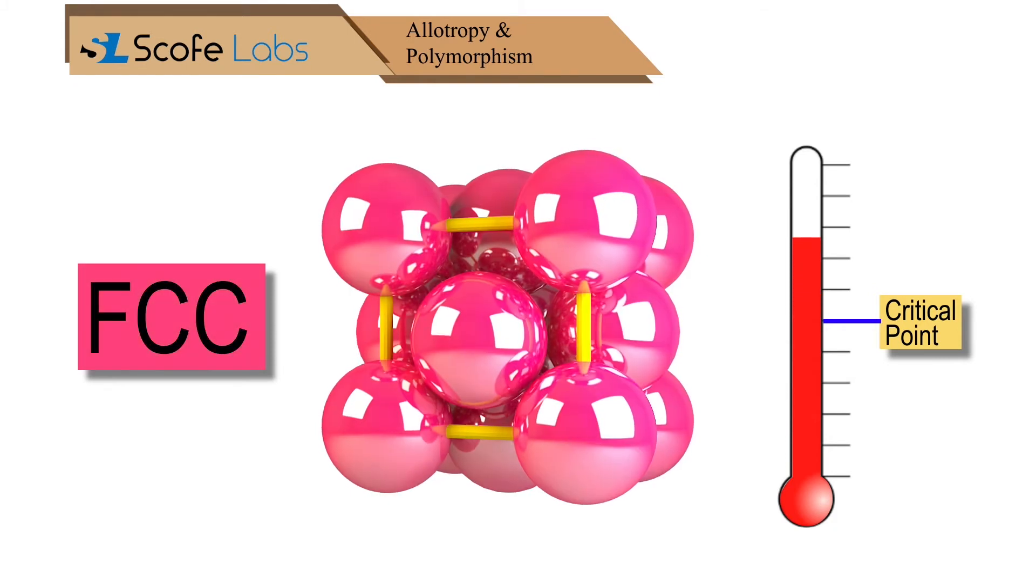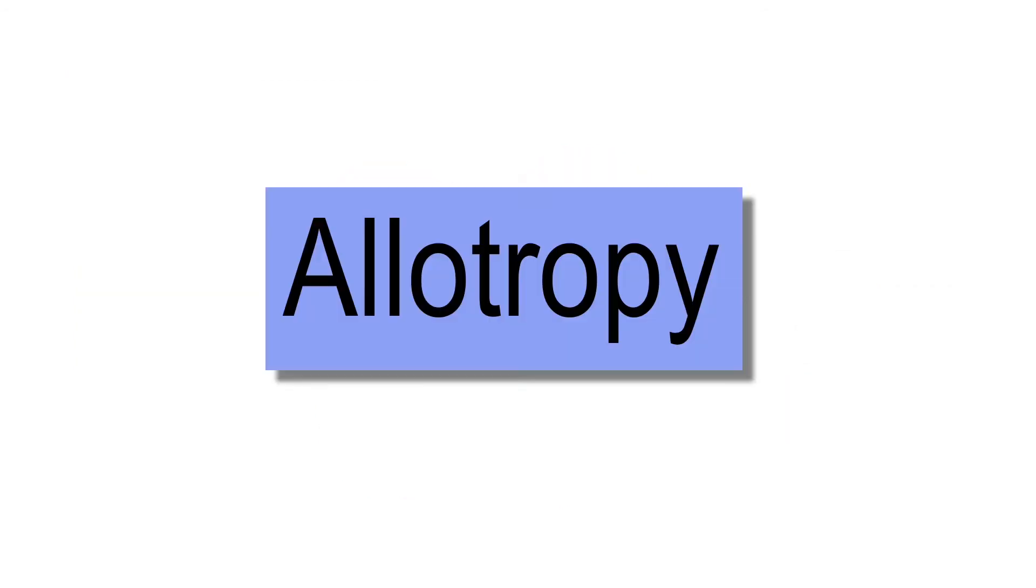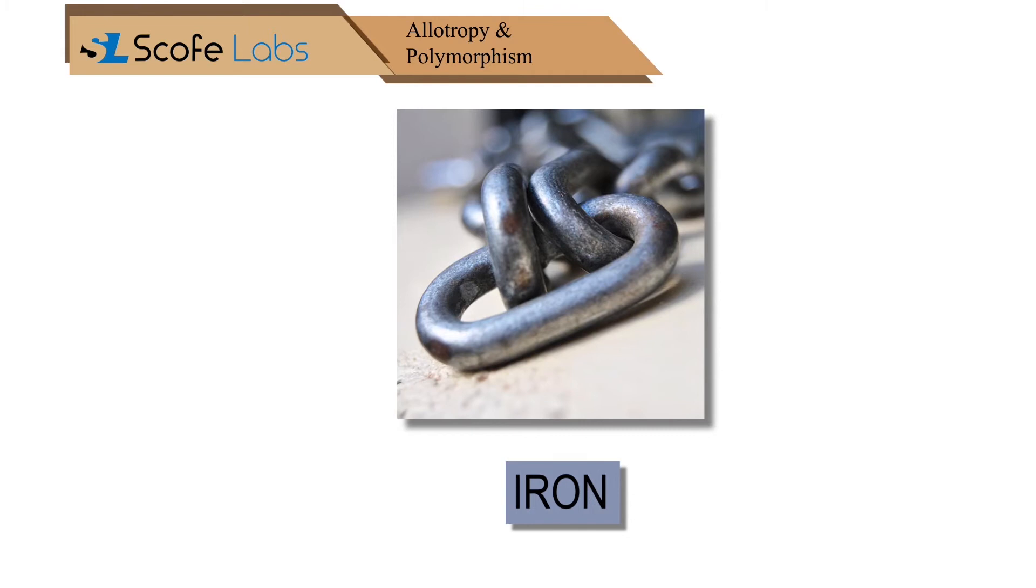The lattice changes from BCC to FCC, and when it cools below the transformation temperature, it changes back to the BCC lattice again. This ability to change one type of macro structure to another is called allotropy. For example, iron is allotropic in nature.